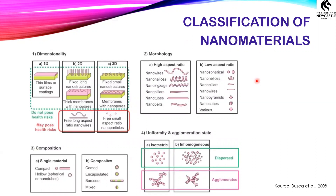Moving on to the classification of nanomaterials. As we saw in the earlier slide, nanomaterials can be classified based on their dimensionality — that is whether they are nanoscale in one dimension, two dimensions, or three dimensions. Generally speaking, the nanomaterials that are nanoscale in one dimension don't pose that much of a health risk compared to the two-dimensional and three-dimensional ones.